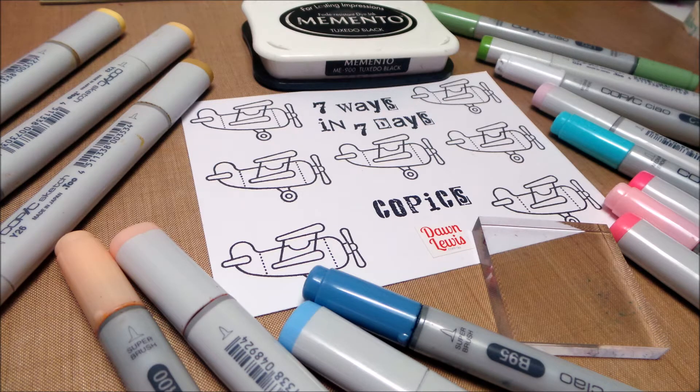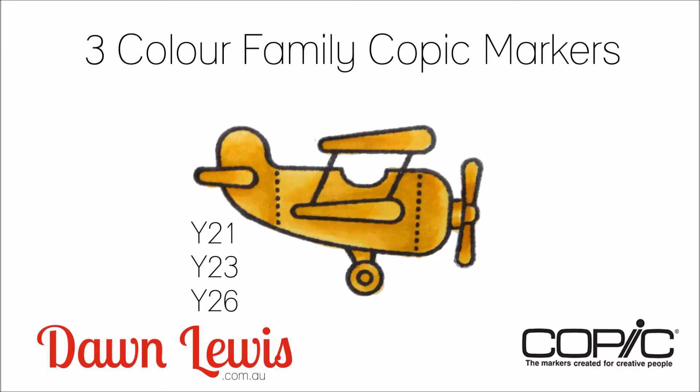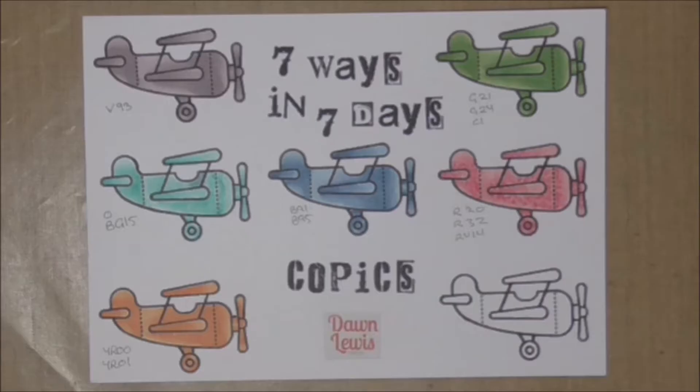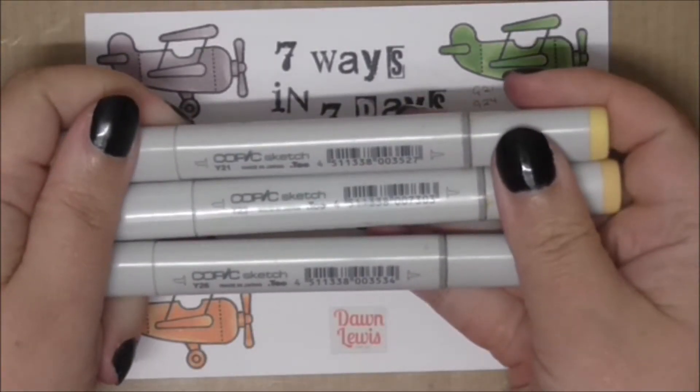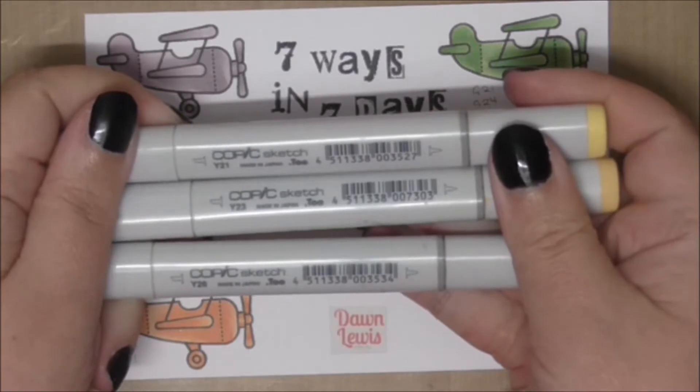Yesterday I showed you how to color with three mismatched markers. Today we're going to do some very traditional color blending family coloring using Y21, Y23, and Y26. I am using sketch markers today but you can use Ciao markers.